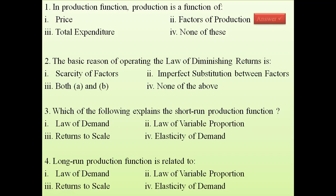Question 2: the basic reason for the law of diminishing returns is — whether it is scarcity of factors, imperfect substitution between factors, both, or none. The answer is both, because the law of diminishing returns has two basic reasons: there is always a limitation or scarcity of factors, and apart from that, there is imperfect substitution between factors.